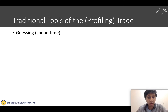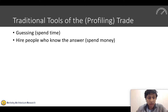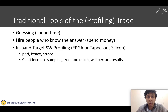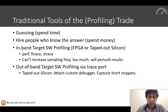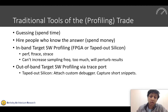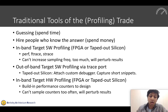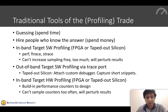If we want to profile a system like this, we could try various optimizations we might know about, or use a profiling tool. One type is in-band target software profiling tools like Perf, Ftrace, or Strace, but the downside is we change the software running on the system, and sampling too often perturbs results. We could try out-of-band profiling via a trace port, but we can only capture short snippets. We could also try in-band hardware profiling using performance counters, but we can't sample too often without perturbation, and we have a limited set of counters available.